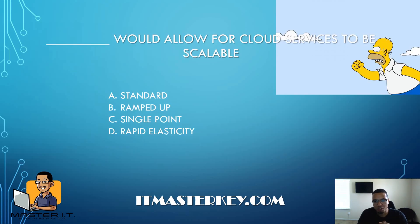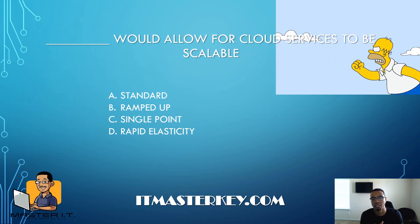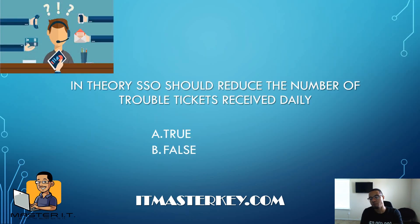Blank would allow for cloud services to be scalable. Scalable means that as your company grows, the network and your capabilities can sustain that growth — so if you currently have 100 users and in a year you have 300, you can accommodate that extra 200 users. What would make cloud services scalable? Easy — rapid elasticity. Acronyms can really trip you up on this test, so make sure you're comfortable with them.